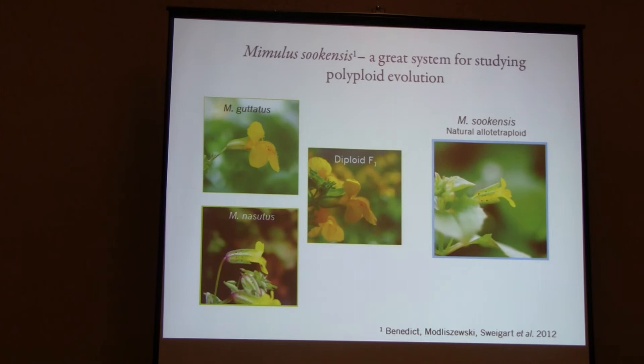The system I'm using is Mimulus suquensis, the naturally occurring allotetraploid. Its diploid progenitors are Mimulus guttatus, which is large-flowered and outcrossing, and Mimulus nasutus, which is small-flowered and selfing. The diploid F1 is somewhat intermediate but tends more towards guttatus in flower size. Mimulus suquensis, on the other hand, looks exceedingly similar to its selfing progenitor Mimulus nasutus.